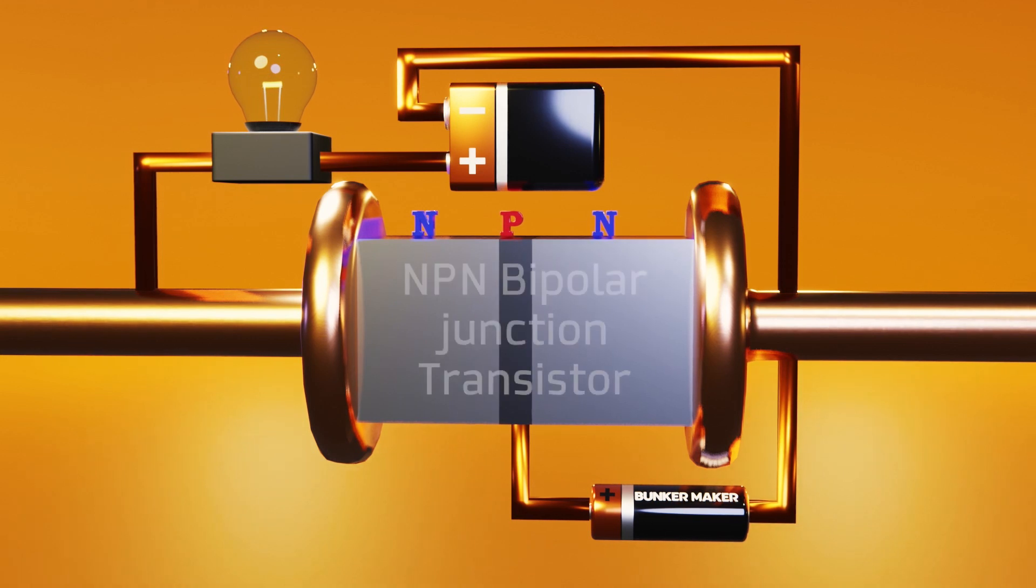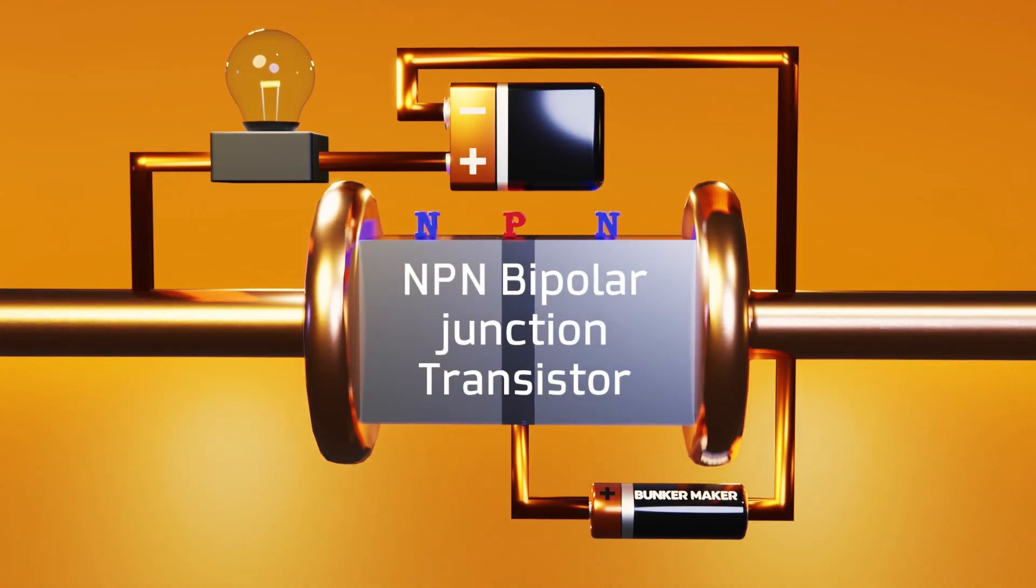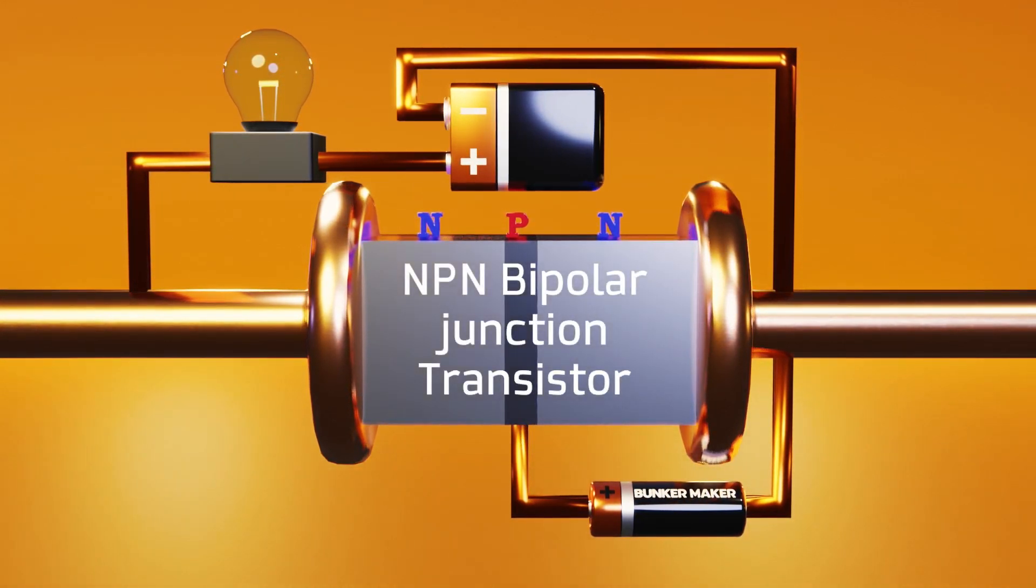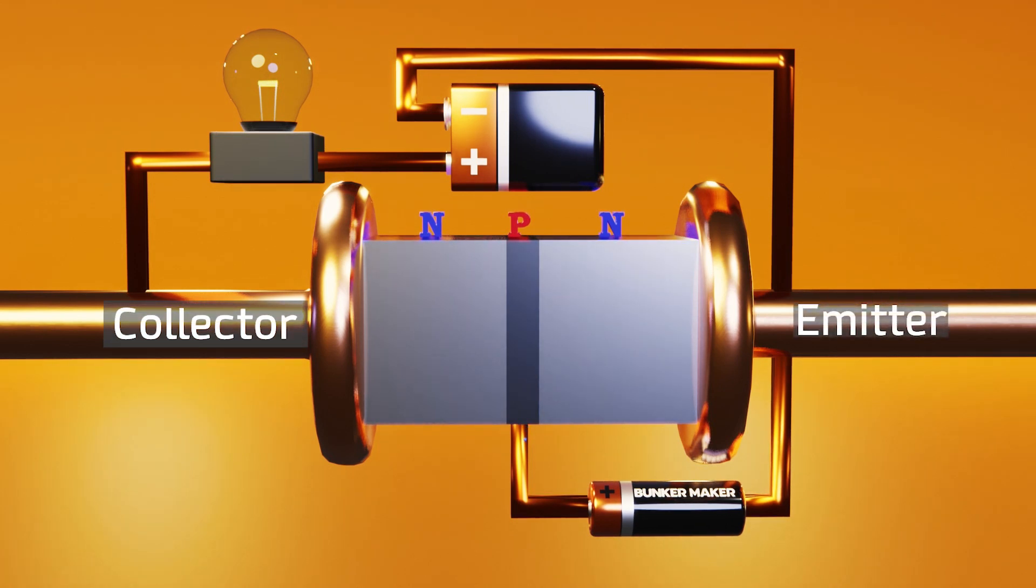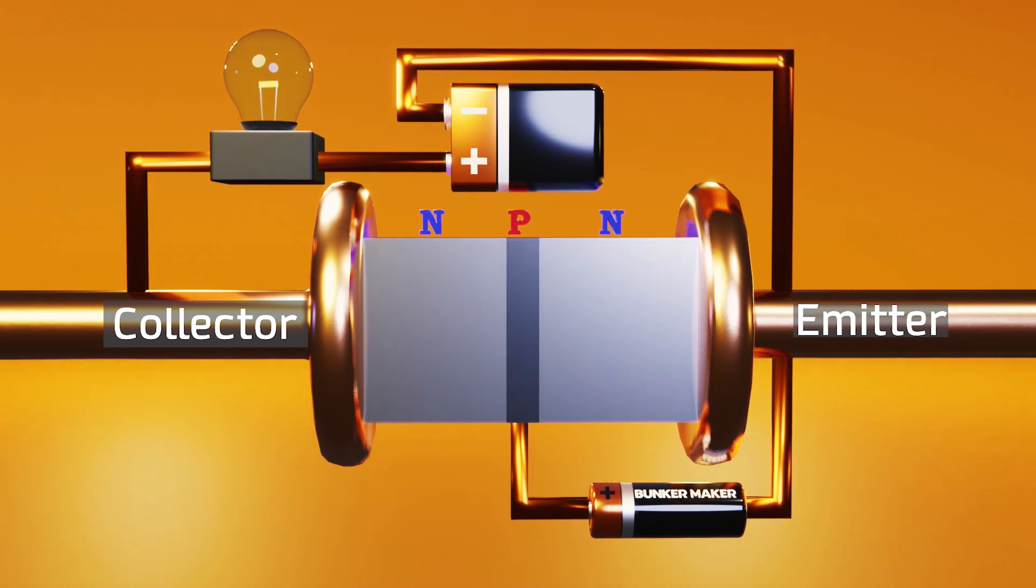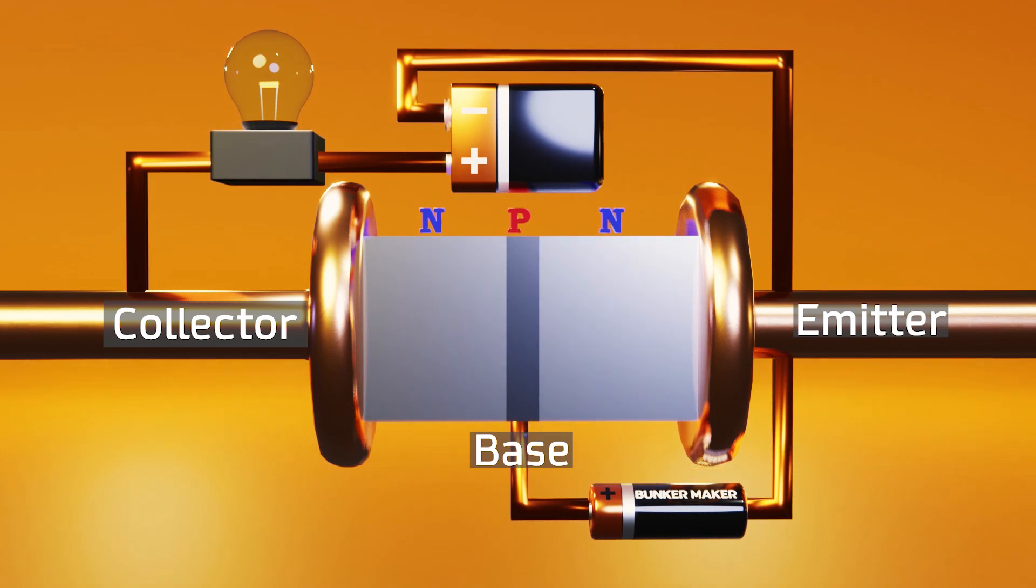The transistor we just saw is known as NPN bipolar junction transistor, and now that we understand how it works, let's talk a little about the connectors. The connector on the left is called a collector, and the one on the right, emitter. And between them there is a high potential difference. The type P semiconductor connector is known as base, and upon receiving a low voltage signal it is able to control if the current can be transmitted between the collector and the emitter, and also in what quantity.